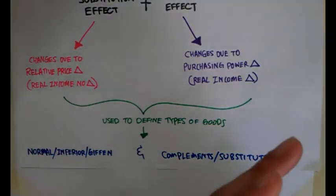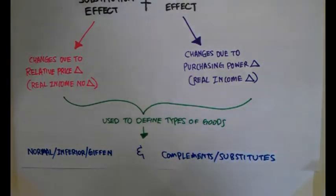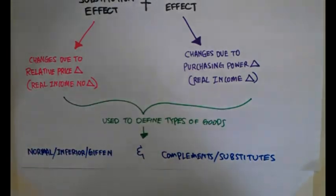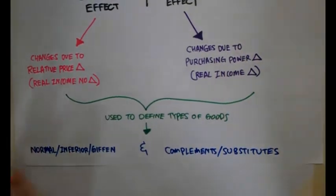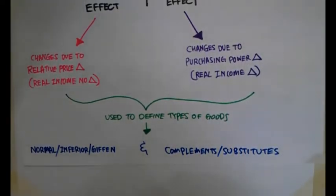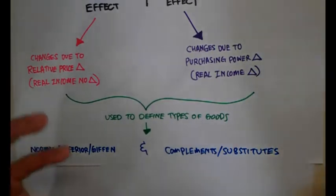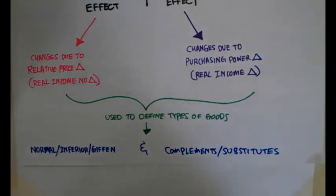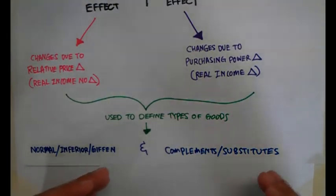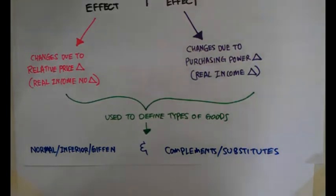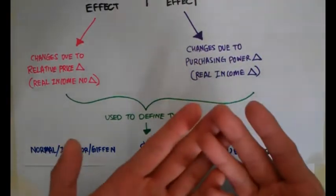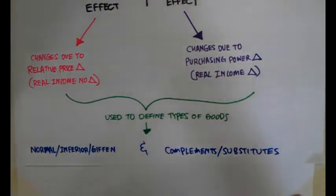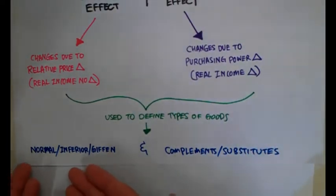Most of the time we would be focusing on good X, and Y would be there just to aid us in our analysis as a control element. What are the types of economic goods? We have a normal good, inferior good, and Giffen good. X and Y can either be complements or substitutes. We will be going through these types of goods in the next video. It is important for us to know how to identify the substitution effect and the income effect before we can tackle the definition of these goods.